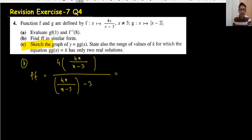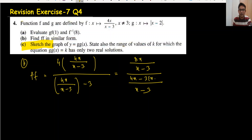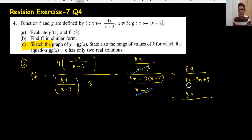Simplifying: the numerator is 16x/(x-3). Taking LCM in the denominator gives [4x - 3(x-3)]/(x-3). The (x-3) cancels, leaving 16x over (4x - 3x + 9), which simplifies to 8x / (x + 9). Note x cannot equal -9 as that gives infinity.